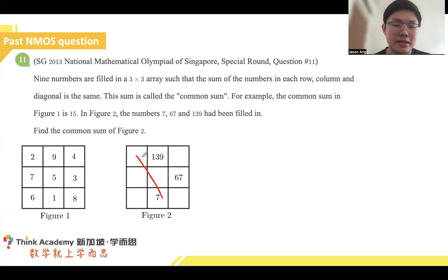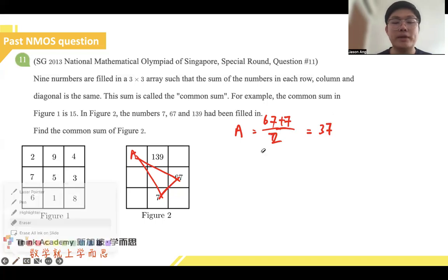We noticed that based on this rule, we have a golden triangle. Let's call this A. We have already formed the answer for A because A would then represent 67 plus 7 over 2. Then this will give us the number 37. So very quickly, we have already obtained one of the values given to us.